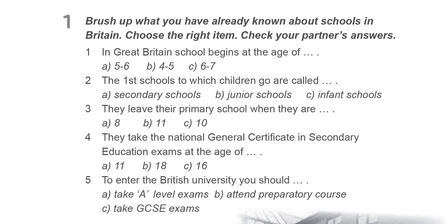Primary education takes place in infant schools and junior schools. Children go to school at the age of 5 and start secondary education when they are 11 or 12. Compulsory secondary education lasts 5 years. Traditionally, secondary schools are divided into 5 years, called forms, from 1 to 5.